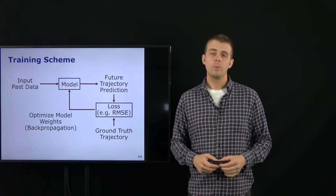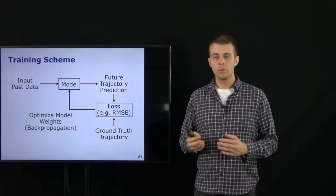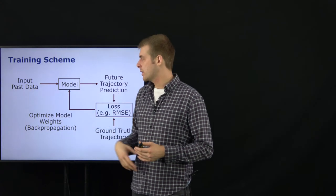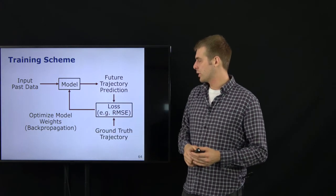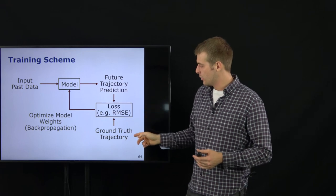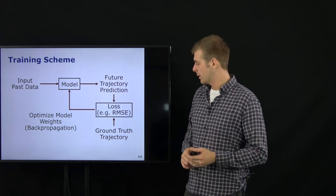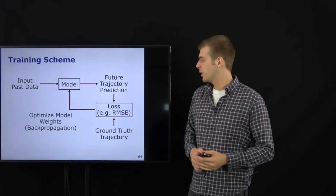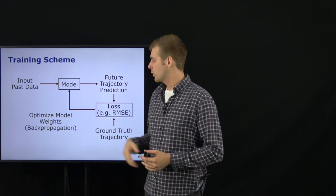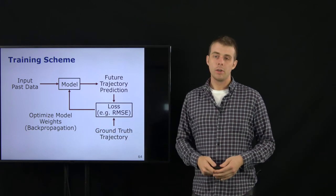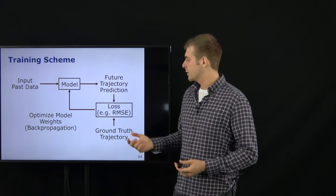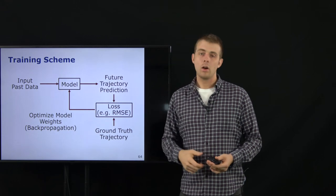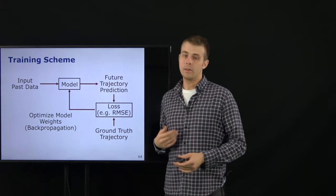A short reminder of how deep learning works: we use past data as input and output a future trajectory. With the ground truth trajectory from observed data, we compute a loss signal — for example, root mean squared error. This loss is used to optimize the model weights via backpropagation, computing the influence of each weight on the loss and updating the weights to improve the loss at the next step.